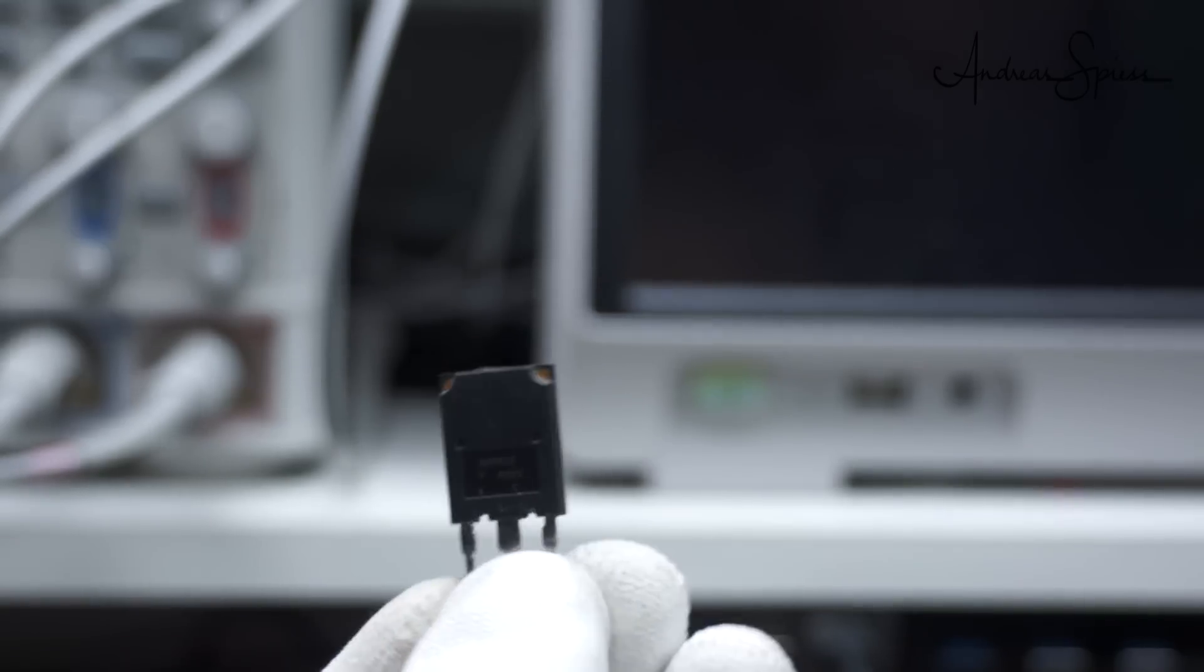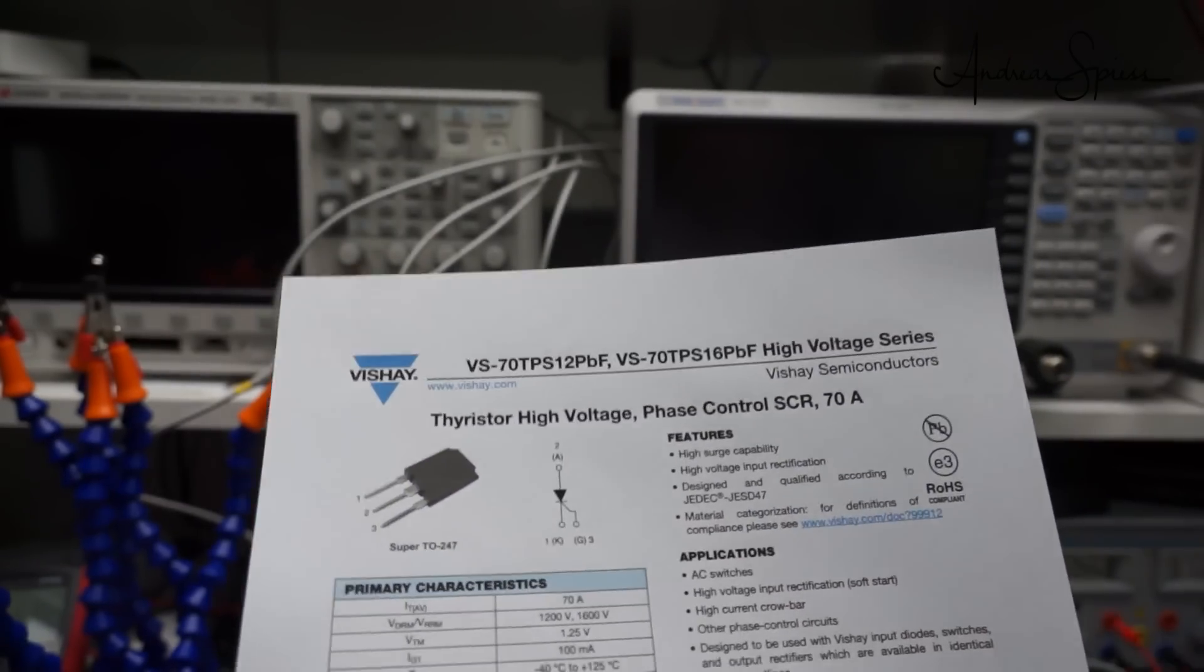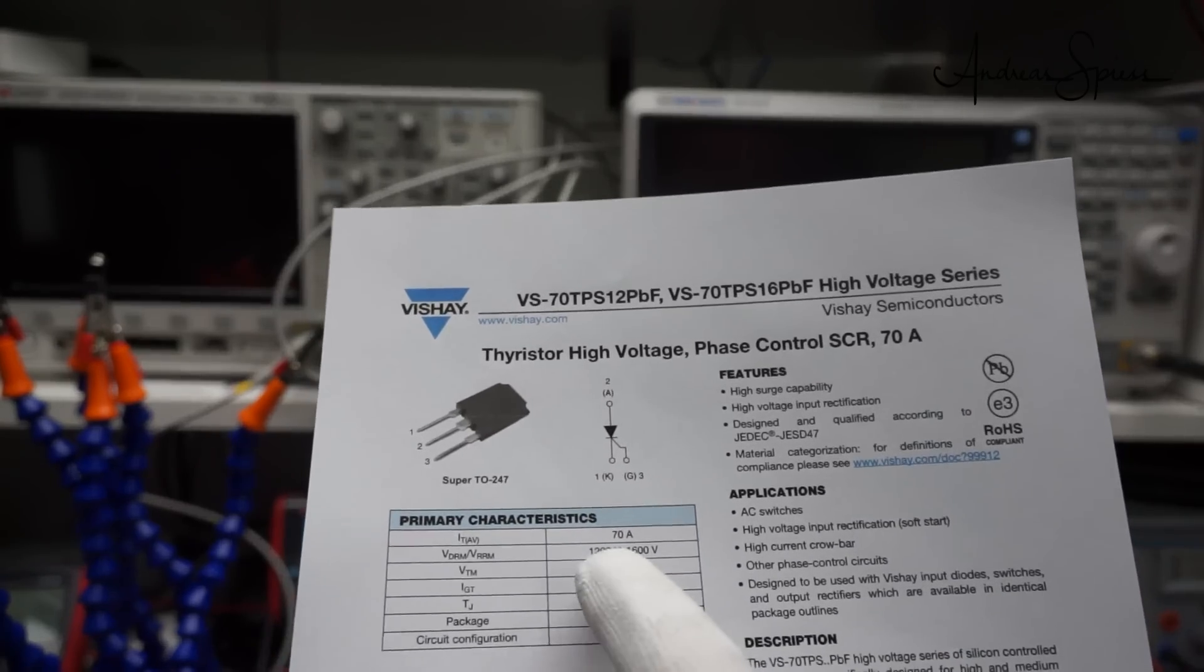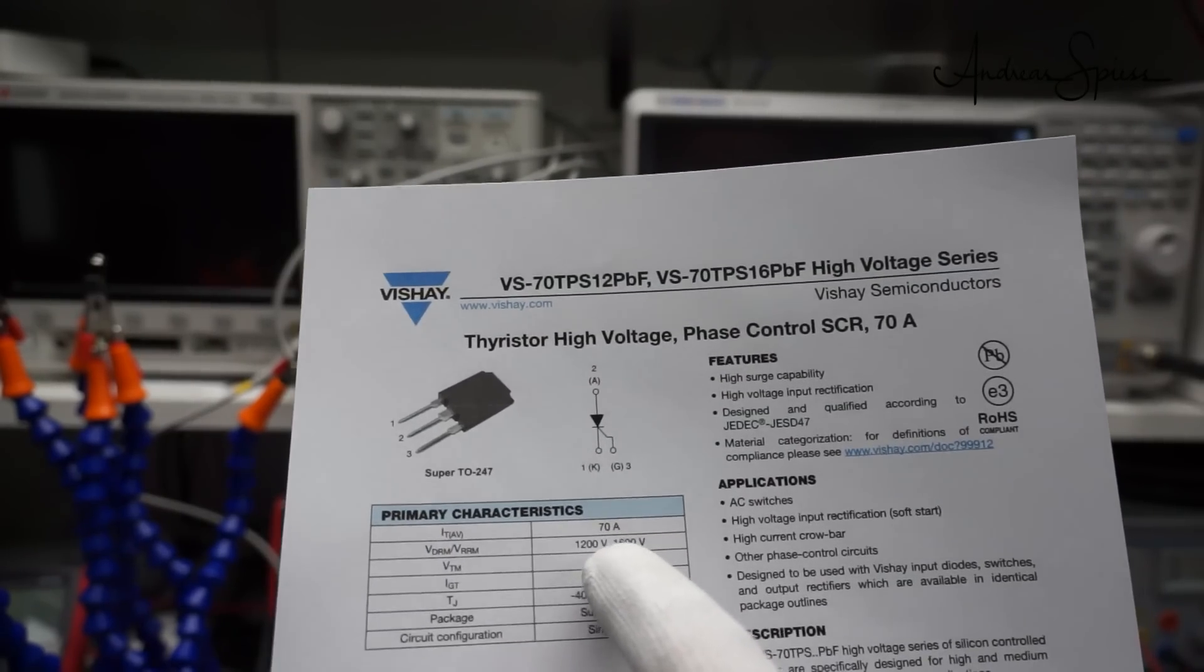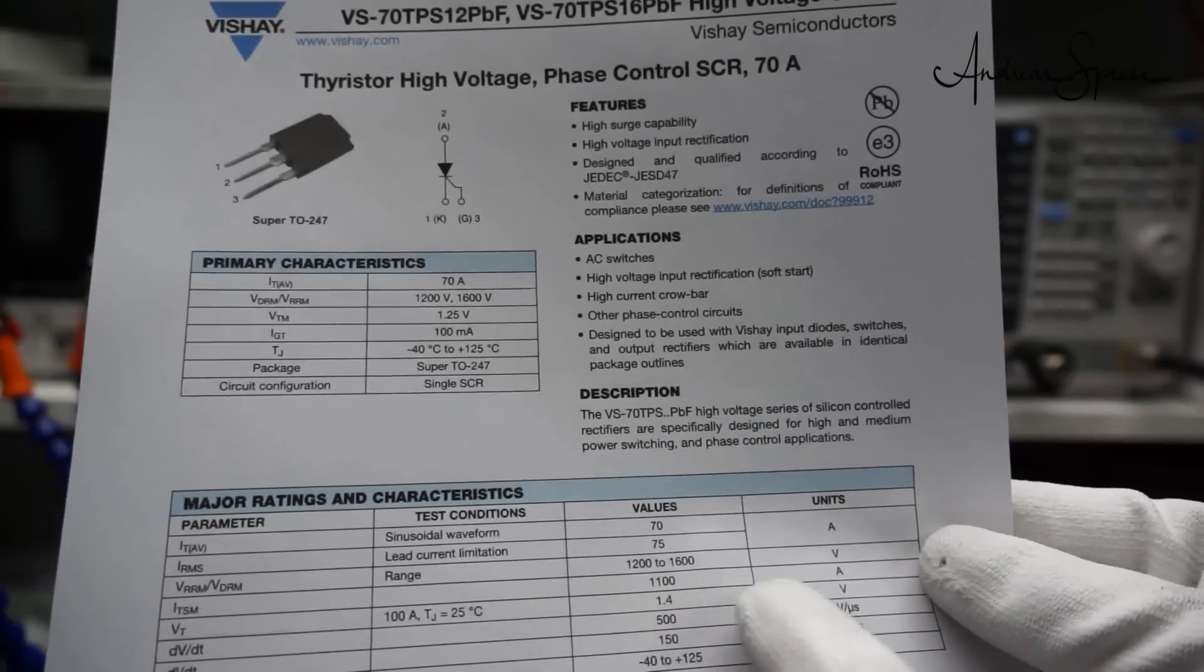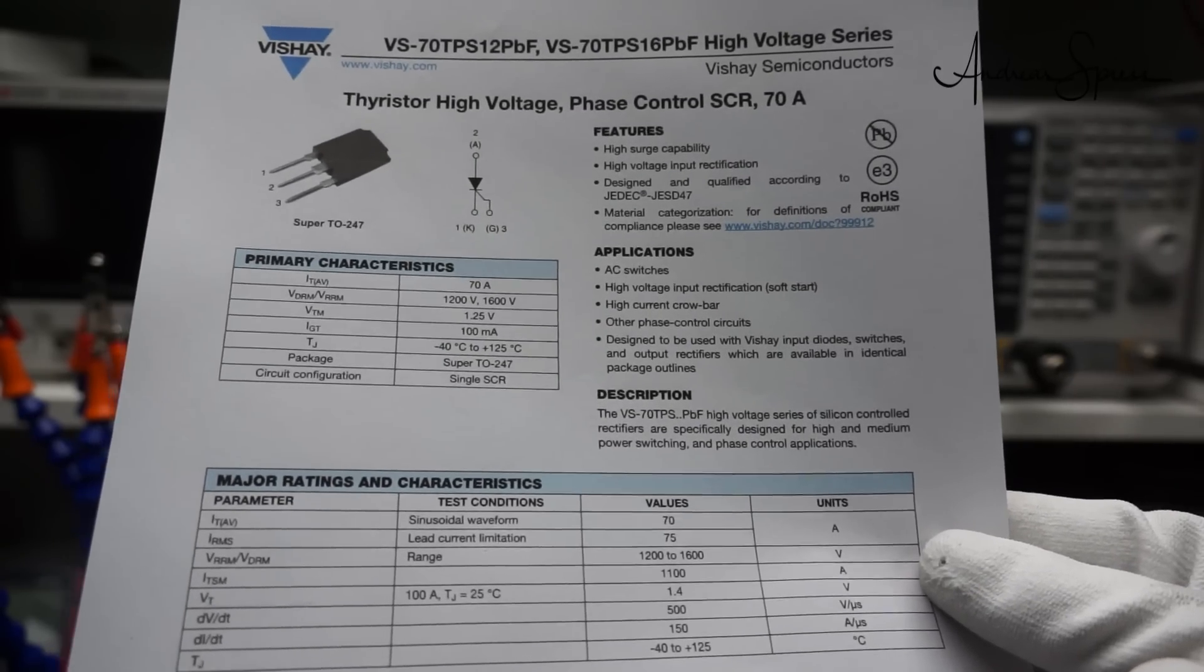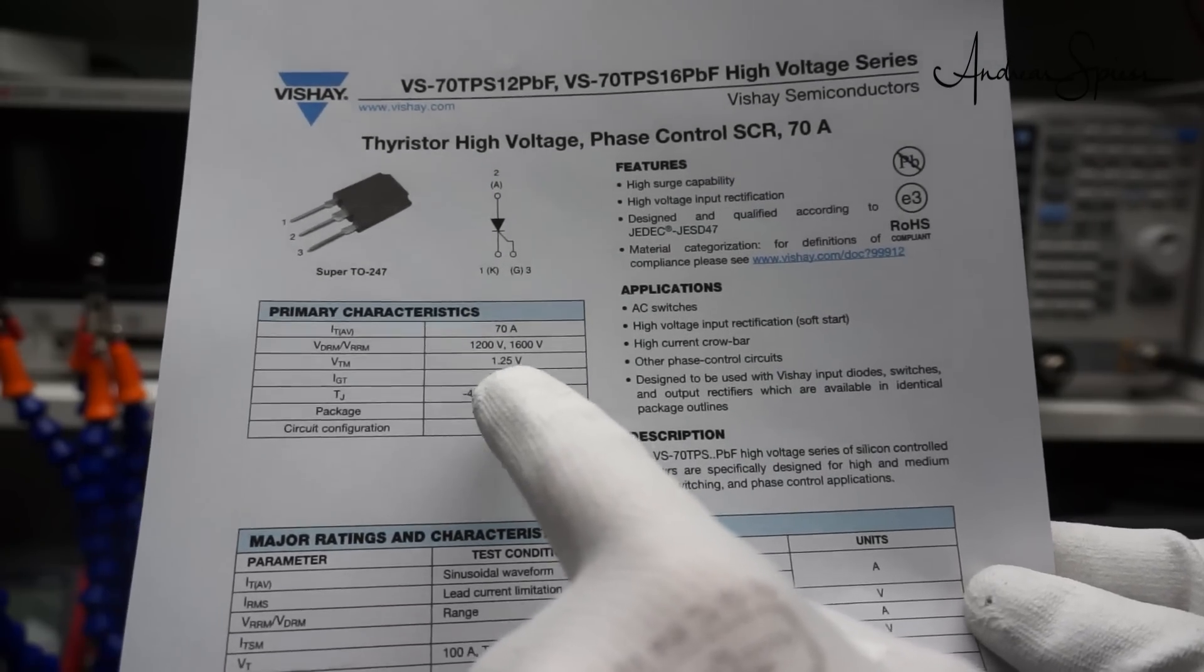Thyristors are the working horses of high-voltage switching. The one I used was called 7-TPS12. And its datasheet says it can deal with more than 1200 volts and 70 amps. Which is not the full truth. If you read the small print, you see it supports up to 1100 amperes for a short time. That is the stuff electric dreams are made of. It only needs a short trigger of 1.3 volts on his gate and then it starts to conduct. Simple and efficient.